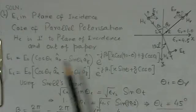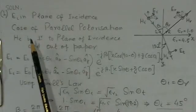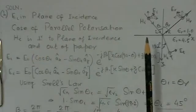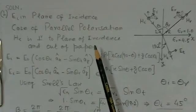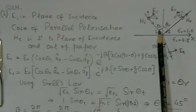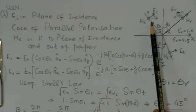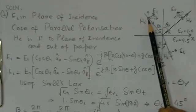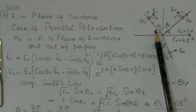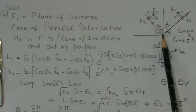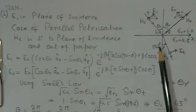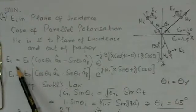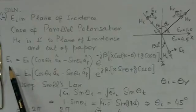Again, we have said E_I is in the plane of incidence. This is a case of parallel polarization. Here, H_I, the magnetic field component, is perpendicular to the plane of incidence and H_I is basically coming out of the paper here. Then only the E cross H, the propagation of energy would be as per the direction for the incident wave. Now, we will try to write the equation for E_I, the incident electric field.